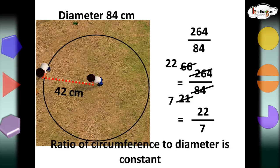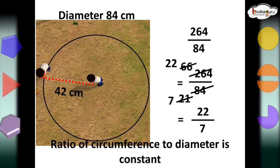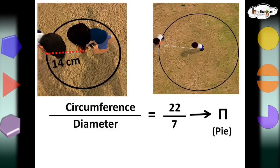So, we see, roughly the circumference is 3 times the diameter. So, the ratio of circumference and the diameter of a circle is always 22 by 7. This ratio is same for all the circles. Now, the ratio of circumference and the diameter is 22 by 7. This 22 by 7 ratio is very important. In math, this ratio is represented by the Greek letter pi.